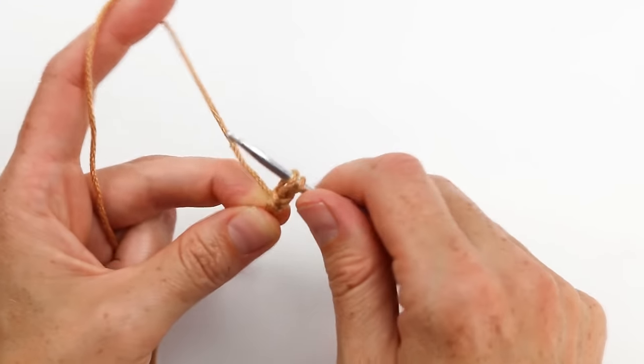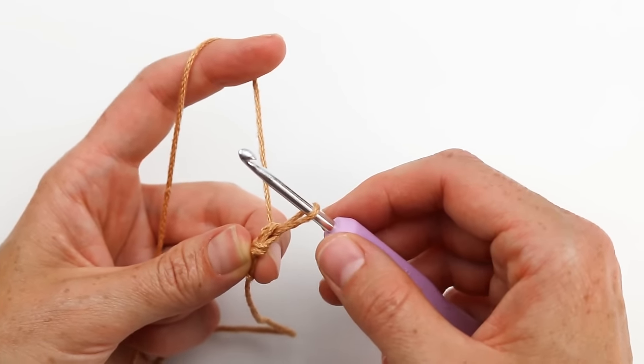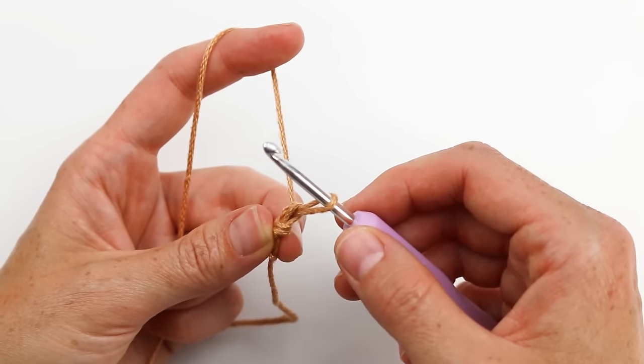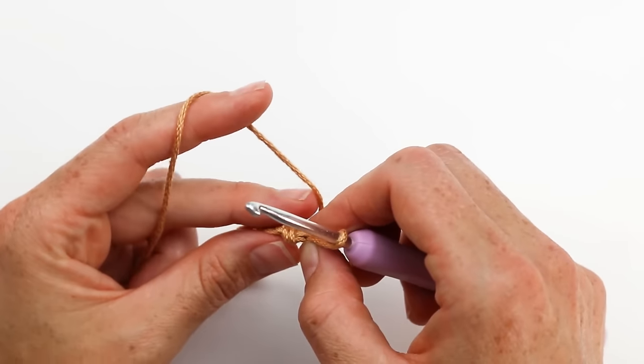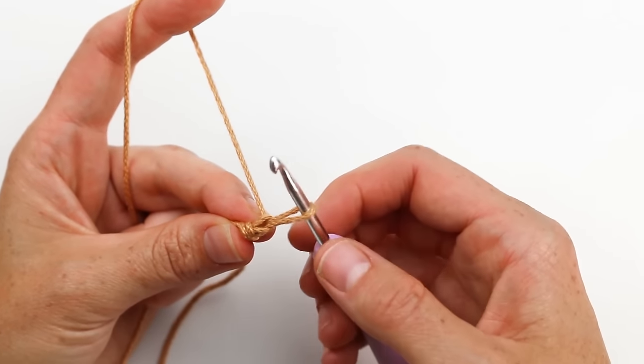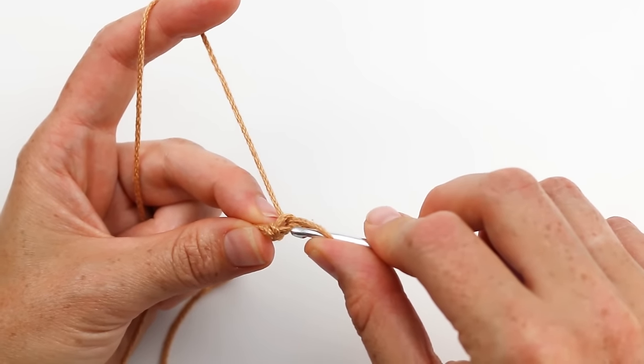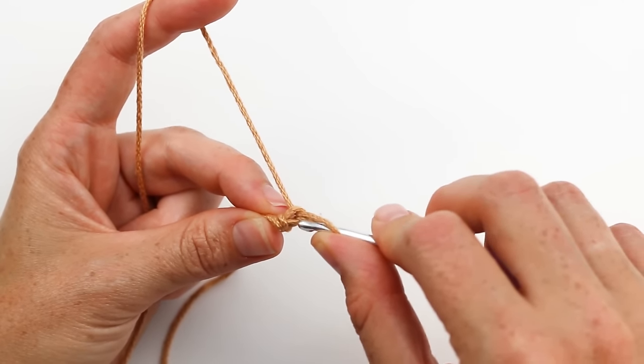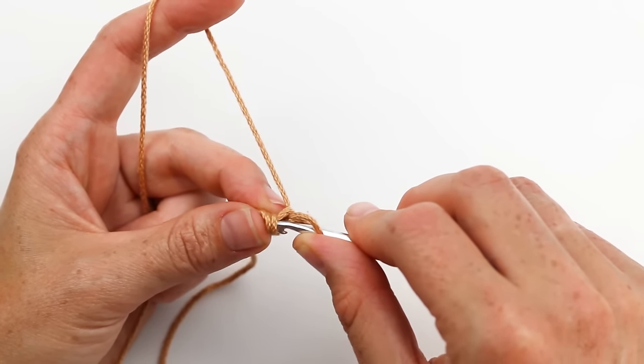Now from here, every subsequent stitch is going to be worked the same way. We're going to rotate this again clockwise and I'm going to work under the two bars at the back of the stitch. You can see I've got my V here and the two lines of the V are pointing to the back of the stitch, which has two bars there. So I'm going to work under the two bars. At the beginning there was only one bar, now there's going to be two bars each time.